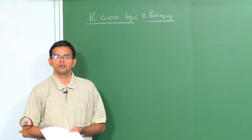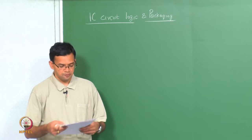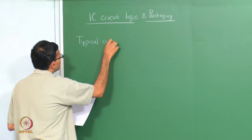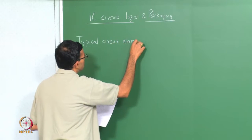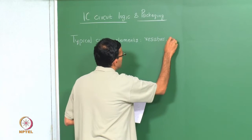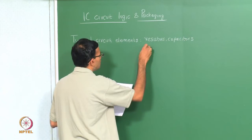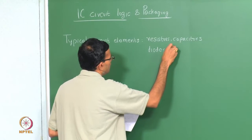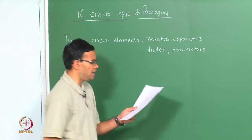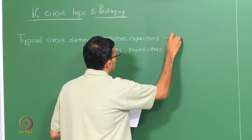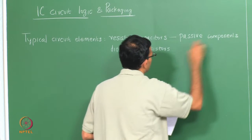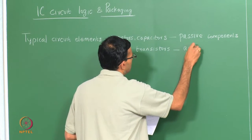This system could be your laptop, it could be a desktop, it could be a mobile computing device. Some of the circuit elements we saw in last class: we looked at resistors or conductors, capacitors, diodes and then transistors. These can be divided into two main types. Resistors and capacitors are essentially called passive components while diodes and transistors are called active components.